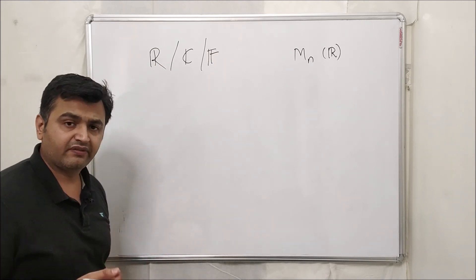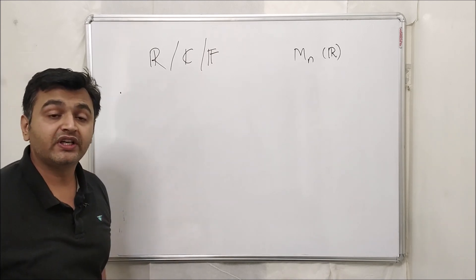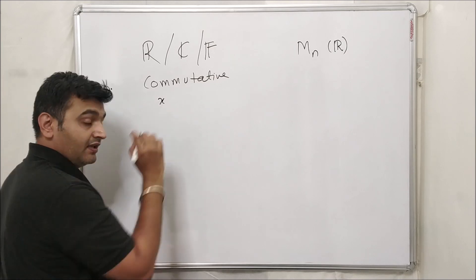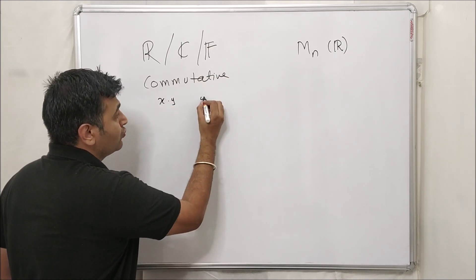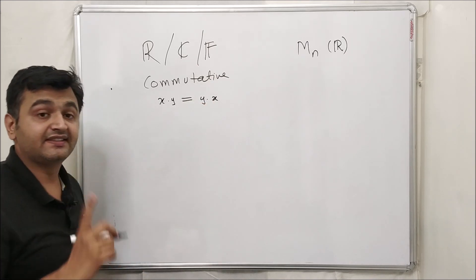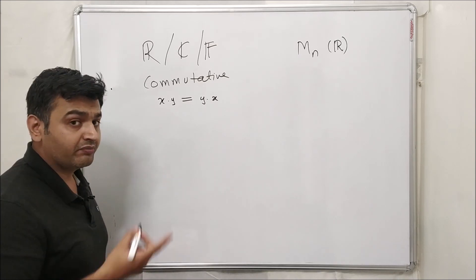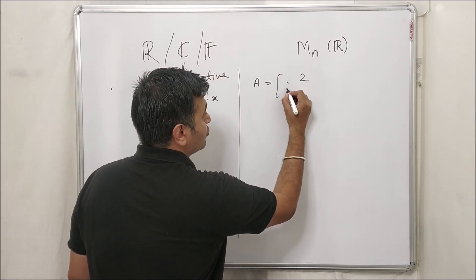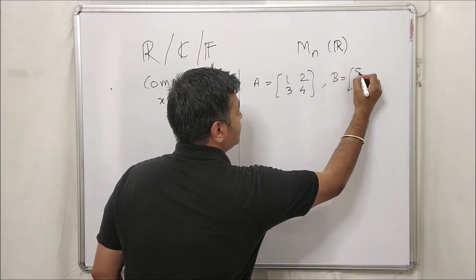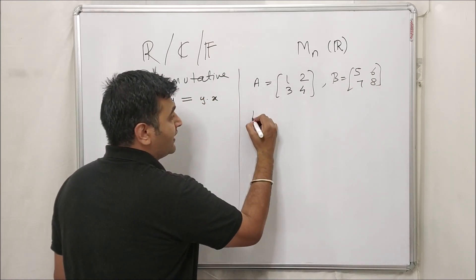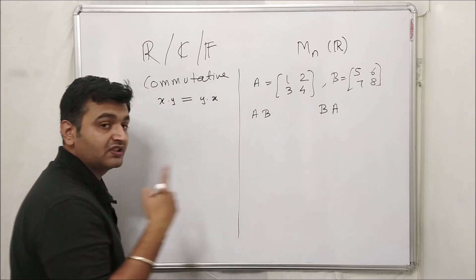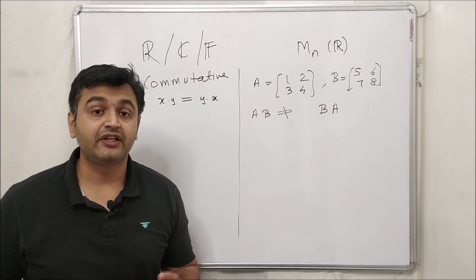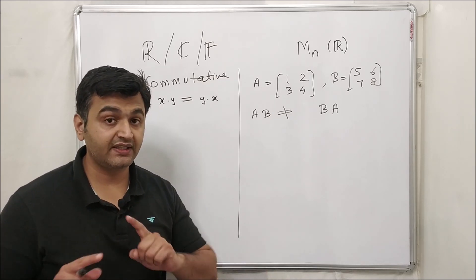The first property is about commutativity. We already know that for two real numbers x and y, x×y always equals y×x. But is that true in matrices? The answer is no. For example, if you take a 2×2 matrix A = [1,2;3,4] and B = [5,6;7,8], and compute AB and BA via normal matrix multiplication, they come out to be not equal. So AB and BA in matrices need not be equal.